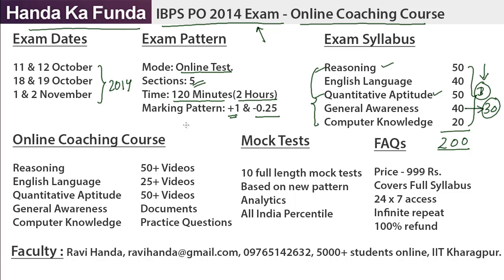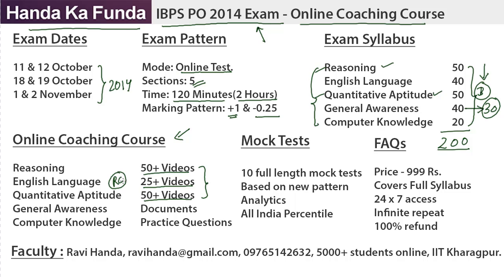Now, a little more about our course. The course is dominated by videos. For reasoning we have more than 50 videos, for quantitative aptitude also more than 50 videos, and for English we have 25 videos with a majority focused on reading comprehension, since a lot of people face issues with it. For general awareness and computer knowledge we don't have videos, because those subjects can't really be taught that way.